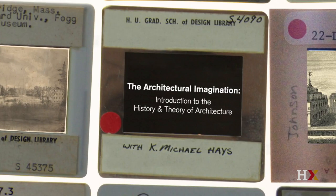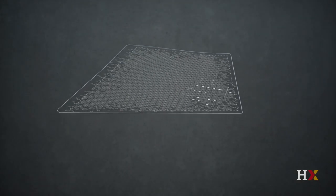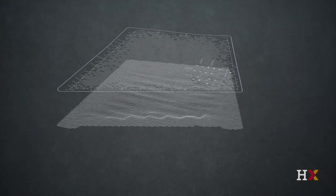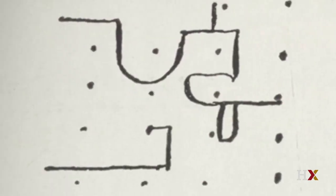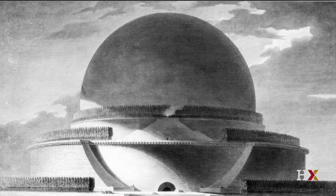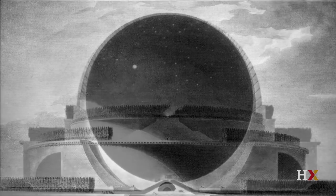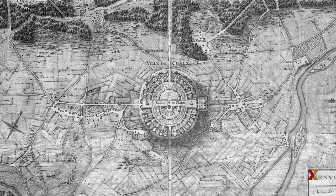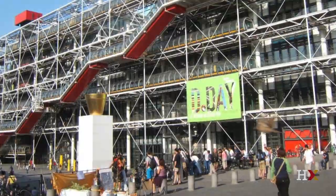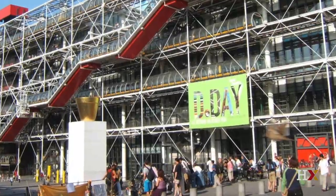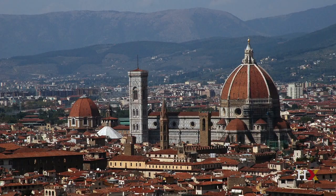This is about the architectural imagination — it's how to think about architecture, but it's also about architecture as a mode of thought. Architecture is one of the most complexly negotiated cultural practices there is.